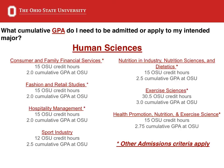Many majors in the College of Education and Human Ecology require different cumulative GPAs for admission. Consumer and Family Financial Services, Fashion and Retail, and Hospitality Management require a 2.0 cumulative GPA as well as 15 OSU semester hours. Sport Industry requires 12 OSU credit hours and a 2.5 cumulative GPA. Nutrition and Industry, Nutrition Sciences, and Dietetics require 15 OSU hours and a 2.5 GPA. Exercise Sciences require 30.5 credit hours at OSU and a 3.0 GPA to apply to the major. Health Promotion, Nutrition, and Exercise Science requires a 2.75 GPA and 15 OSU hours.